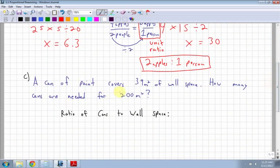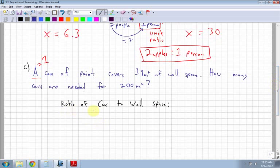A can of paint, so that's 1 can of paint, covers 39m² of wall space. How many cans are needed for 200m²? So if I'm going to set up a ratio here, ratio of cans to wall space, I know that my ratio is 1 can per 39m².